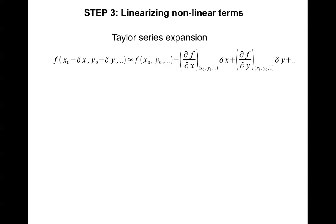The third step is to linearize the nonlinear terms using the Taylor series expansion. The Taylor series says: a function f(x, y, ...) evaluated at x-naught plus delta-x, y-naught plus delta-y is approximately equal to the function evaluated at x-naught, y-naught, plus the partial of f with respect to x evaluated at the operating point times delta-x, plus the partial of f with respect to y evaluated at the operating point times delta-y, and so on for more variables. We only take the first partial — not the second.